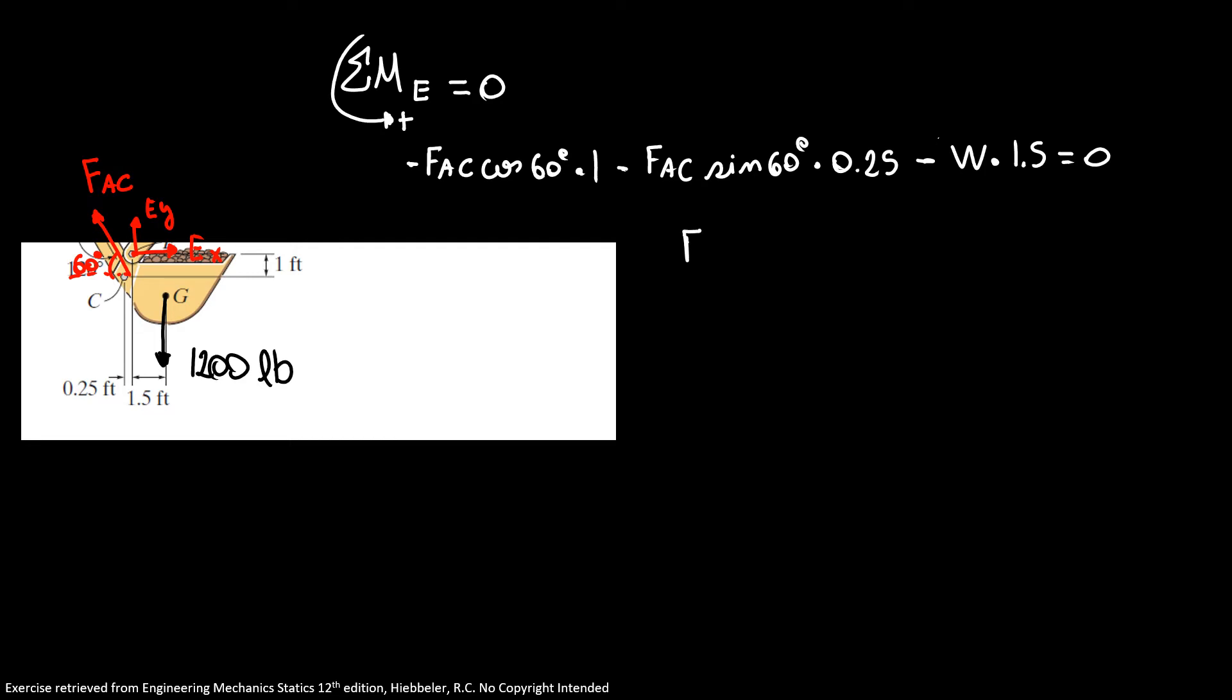So we have our force AC is equal to 1,200 times 1.5 over cosine of 60 plus 0.25 sine of 60 degrees, and here do not forget our minus sign. So our FAC is equal to minus 2,512.2 pounds. What means that minus? That our force, instead of pointing up as I drew here, is pointing that way. So here is our force AC with the correct sign.